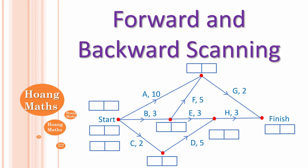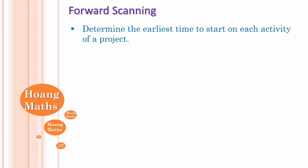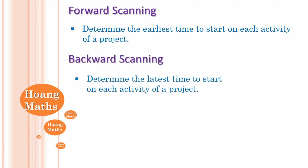If you can, please download or print out the worksheet in the description below so you can work with me. Forward scanning is to help you work out the earliest time to start on each activity. Backward scanning is to help you work out the latest time that you can start on the activity. To do backward and forward scanning, we need to draw a box like this.